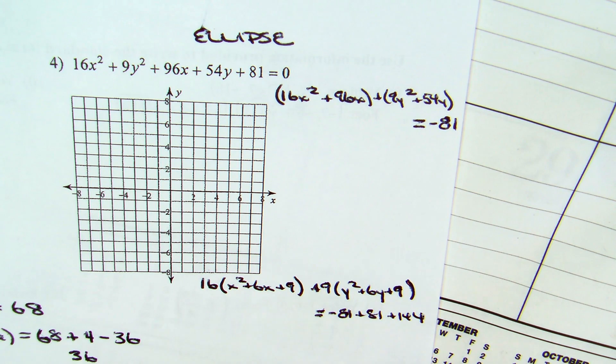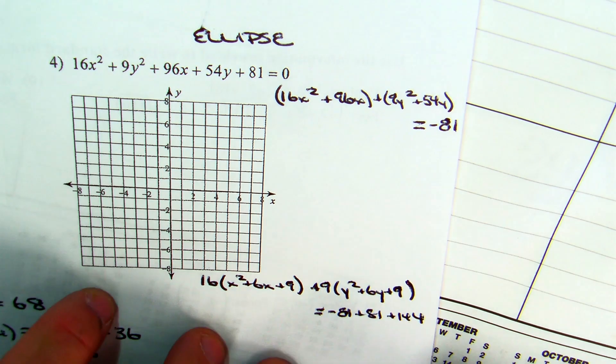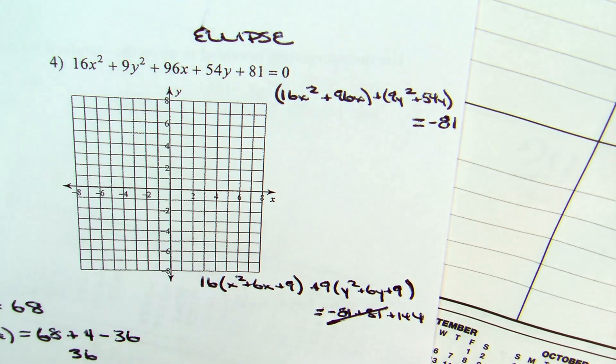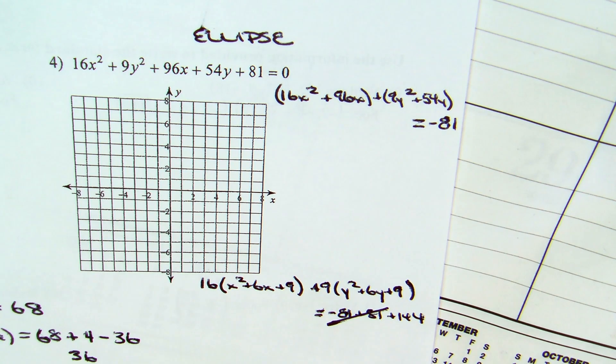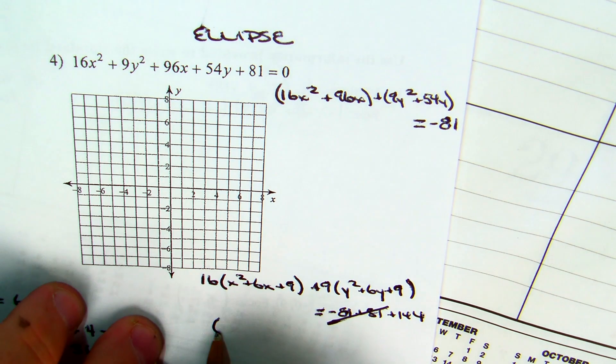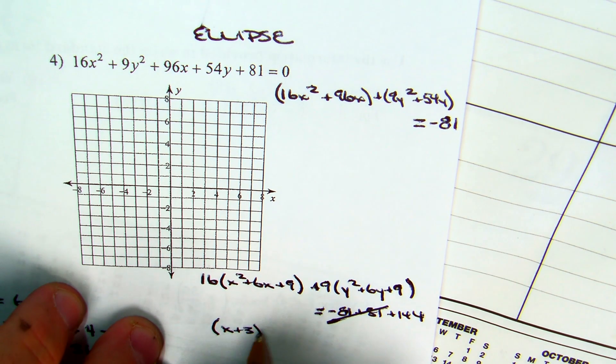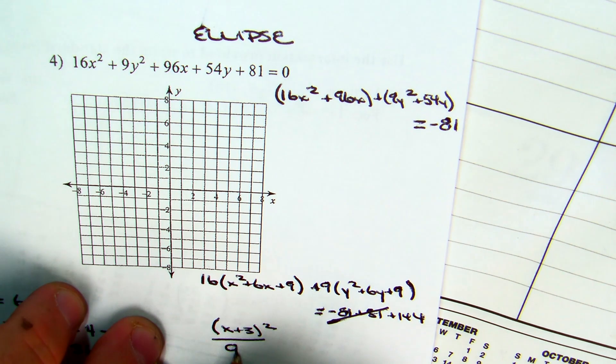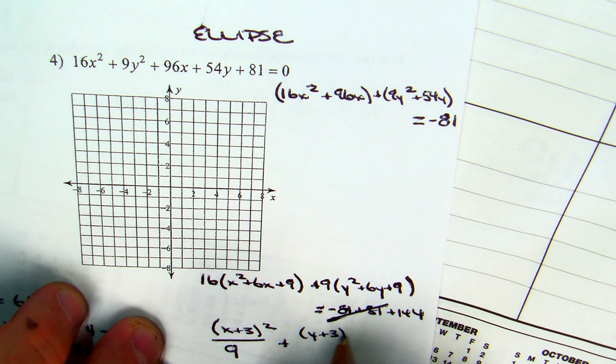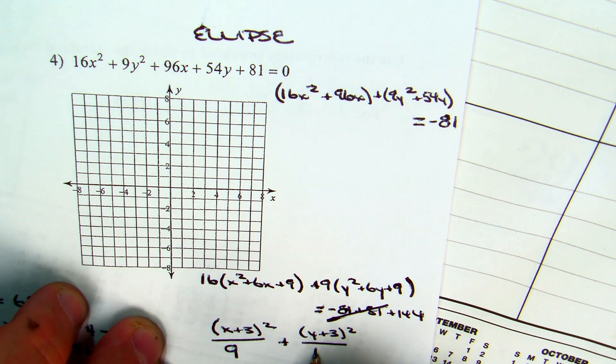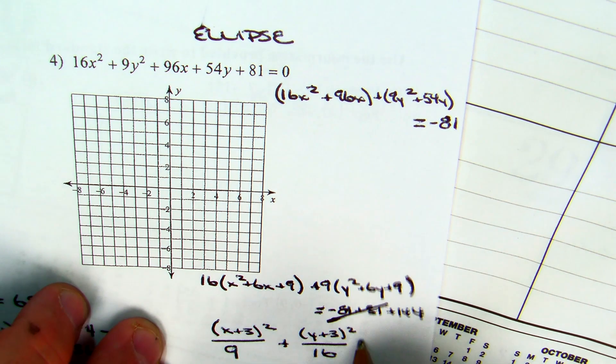What's the negative 81 plus 81 going to do to each other? Cancel out, giving you 144. So, what are you going to divide both sides by? 144. That's going to give me x plus 3 squared over 9 plus y plus 3 squared over 16 equals 1.